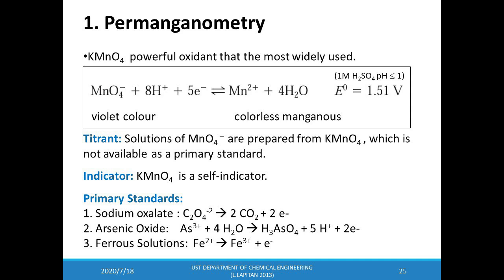Permanganometry involves the titration of the analyte with potassium permanganate solution, which is probably the most widely used of all volumetric oxidizing agents. In most cases, permanganometry is performed in a very acidic solution. The standard potential of this electrochemical reaction under this condition is +1.51 volts. Potassium permanganate is a powerful oxidant, readily available at moderate cost, and the intense color of the permanganate ion is sufficient to detect the endpoint. Permanganate can serve as its own indicator since its reduced form, manganous (Mn2+), is almost colorless. Standardization of potassium permanganate solutions is accomplished against primary standard reducing agents such as sodium oxalate, arsenic oxide, or Fe2+ prepared from iron wire.